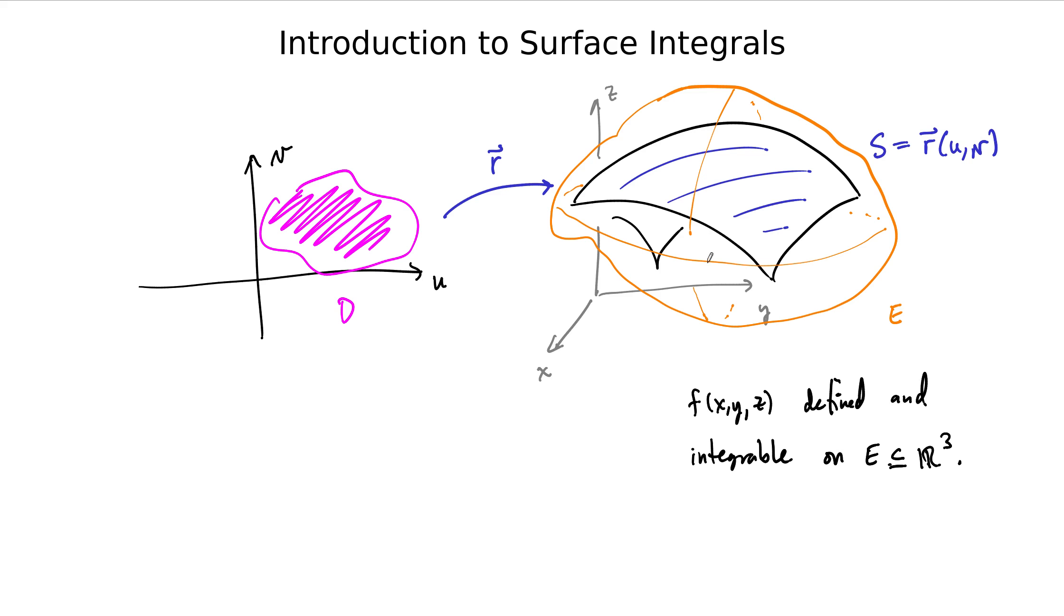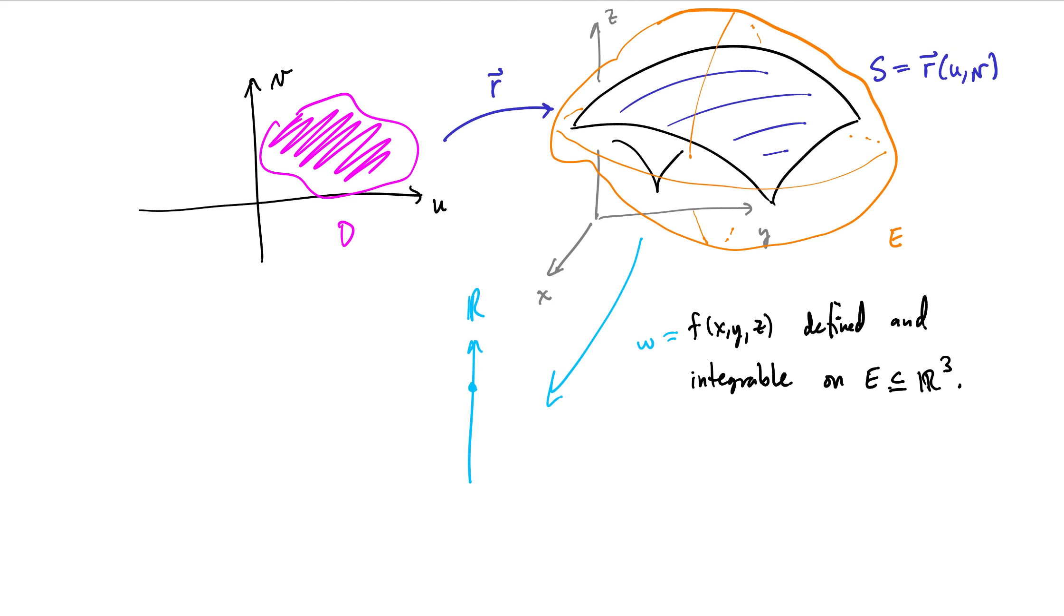So we think of this function as mapping all the points in E to some real numbers. So some fourth dimension in some sense here, right? Every output here is like a w value. So some real numbers. And so then what we can do is we can assign a height to each point along the surface in some other dimension. And we can try to add up the little volumes of the portions of this.